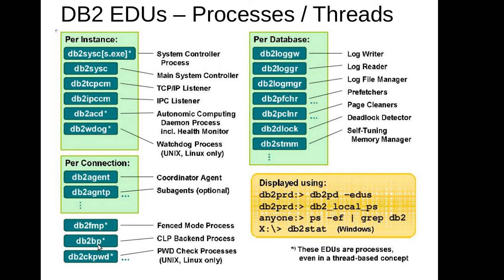When we make a local connection, the process is db2bp, which uses the IPC listener to connect to the database. There is also a process called the fence mode process, db2fmp, which is used for running stored procedures. So for the instance startup order: watchdog starts db2sysc, tcpcm, IPC, and acd; db2sysc starts check password. db2fmp starts on demand - it is ad hoc and will not start initially.